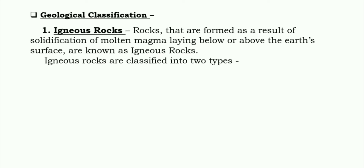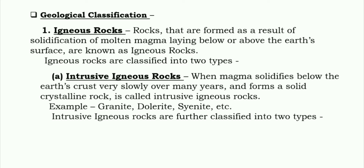First, geological classification. Igneous rocks: rocks that are formed as a result of solidification of molten magma lying below or above earth's surface are known as igneous rocks. They are classified into two types. First is intrusive igneous rocks: when magma solidifies below the earth's surface very slowly over many years and forms a solid crystalline rock, it is called intrusive igneous rock. Examples: granite, dolerite, syenite, etc.